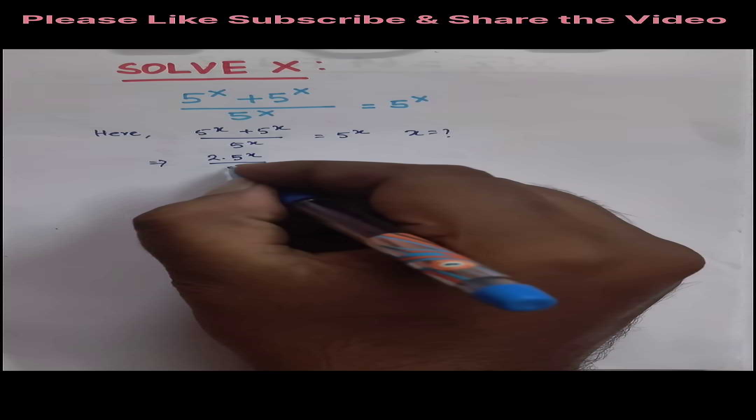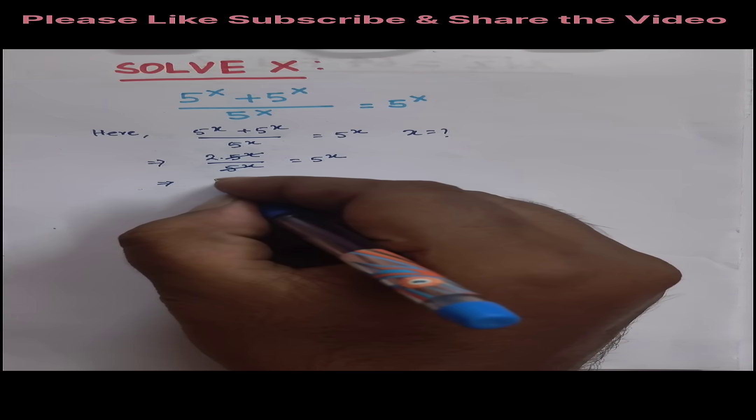So after simplification on numerator we get 2 into 5^x upon 5^x is equal to 5^x. So here 5^x and 5^x is cancelled out. So the remaining part left is 2 equal to 5^x.